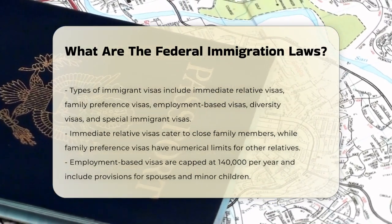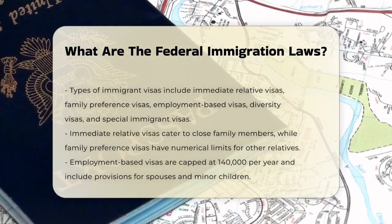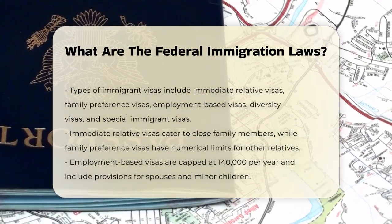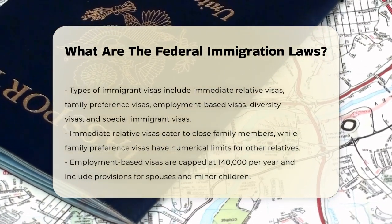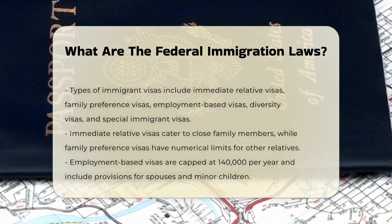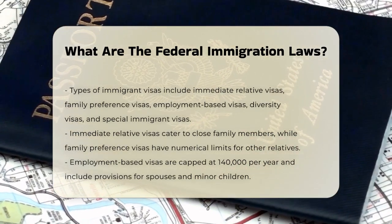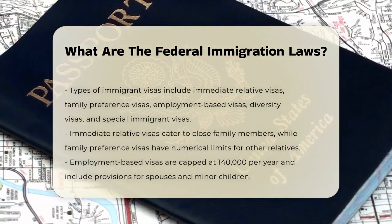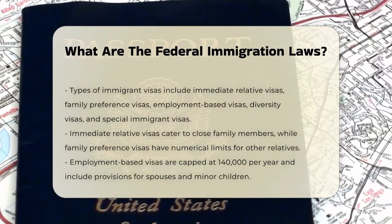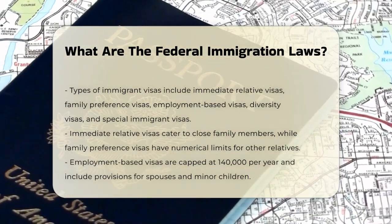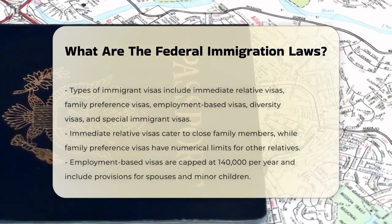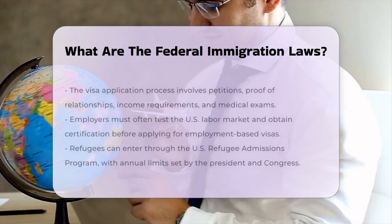The process of getting an immigrant visa involves several steps. For family-based immigration, a U.S. citizen or lawful permanent resident must petition for their relative, prove the relationship, meet income requirements, and sign an affidavit of support. The relative must also meet eligibility criteria, including a medical exam and vaccinations.